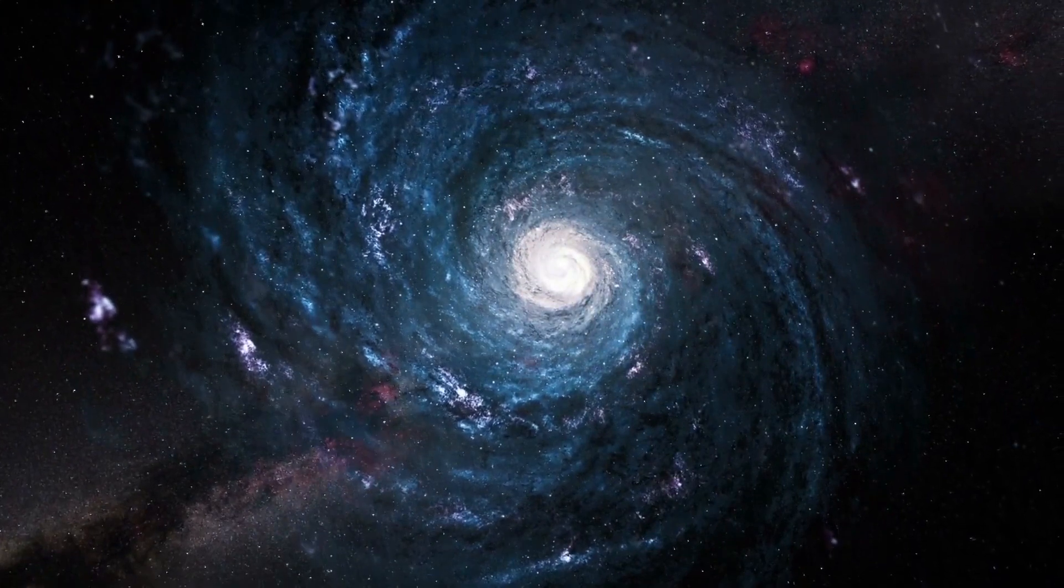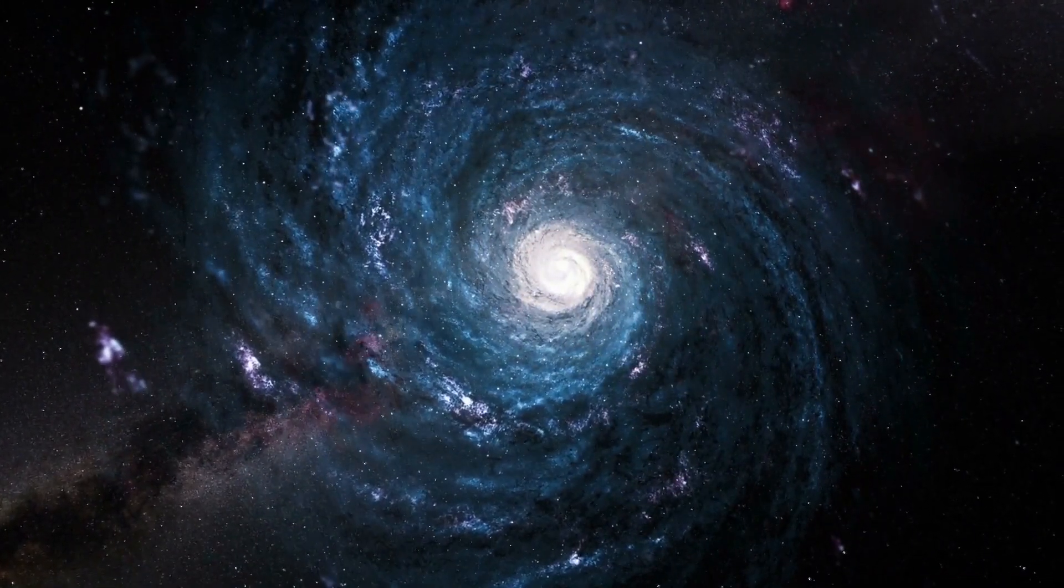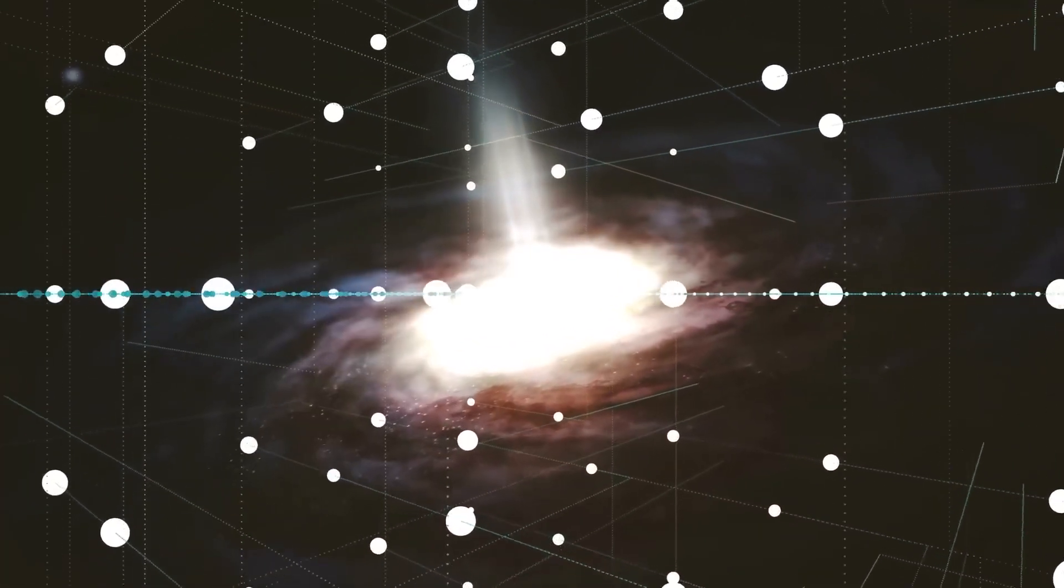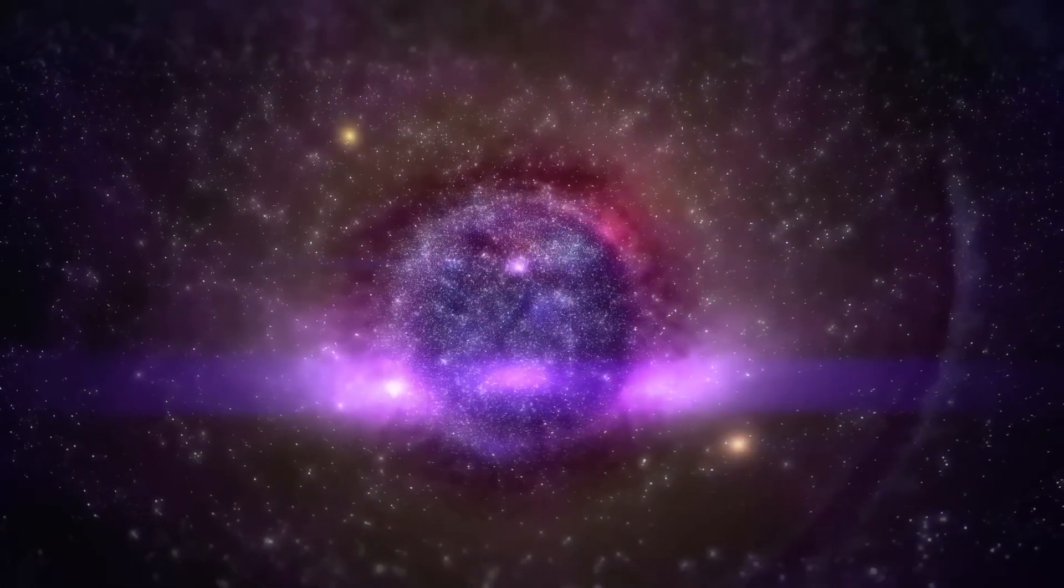This binary star, which we've given the designation PB3877 and which is found approximately 18,000 light-years away from Earth, is not the first hypervelocity star that we've discovered in our galaxy.